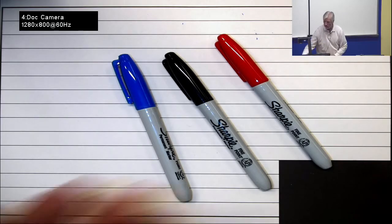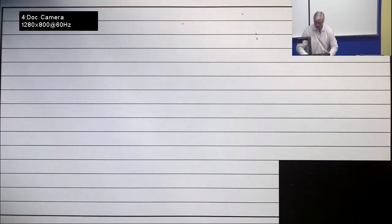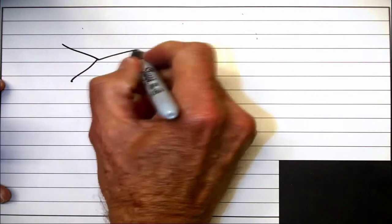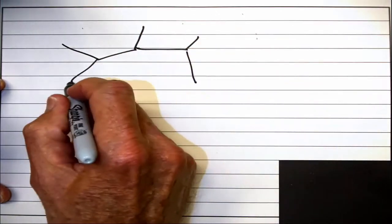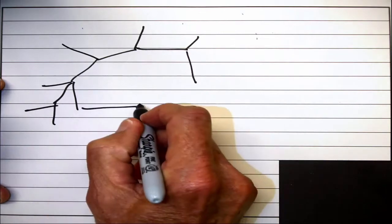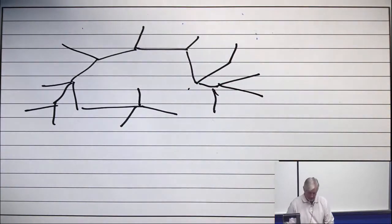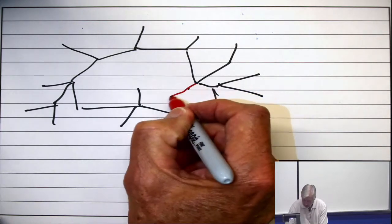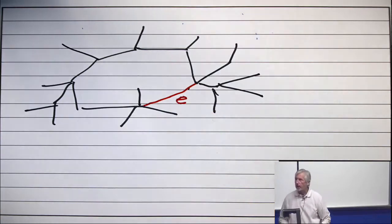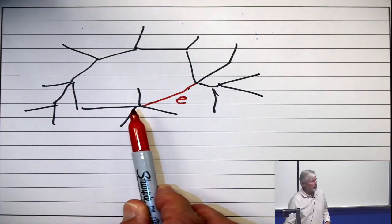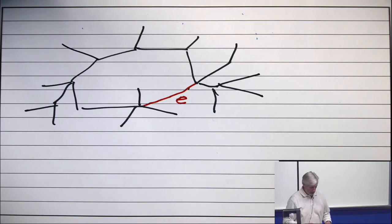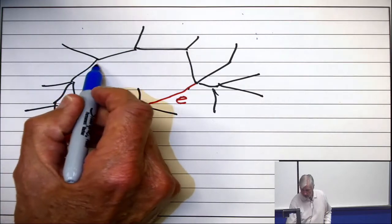So, here's a spanning tree. And I take any edge which is not in that tree. Oh, how about this one? So, this is the edge E. E is not in the tree. Now, I look at the two endpoints. And the two endpoints are connected by a unique path in the tree. Pick one. Doesn't matter which one. Say this one. This is F.